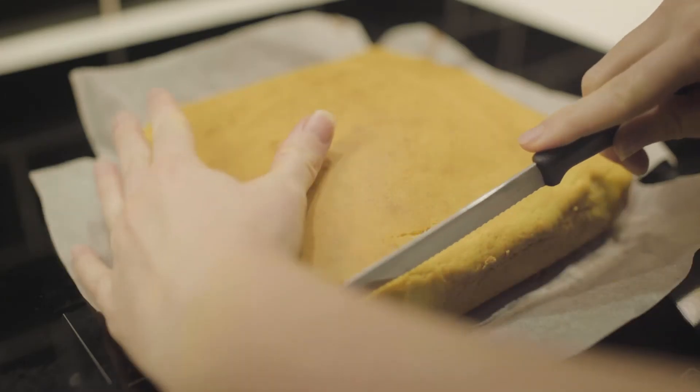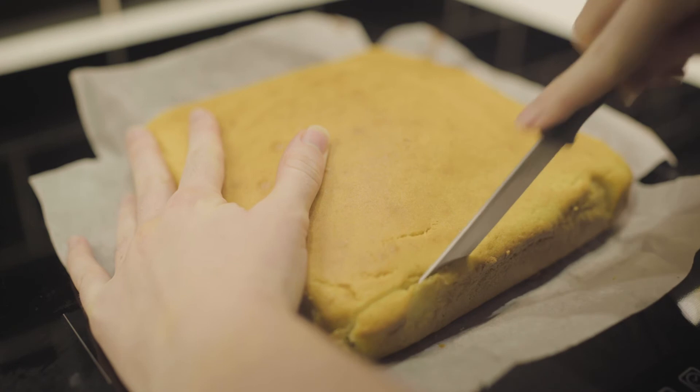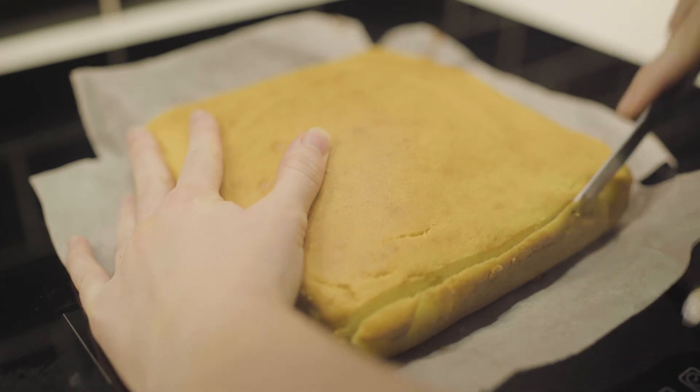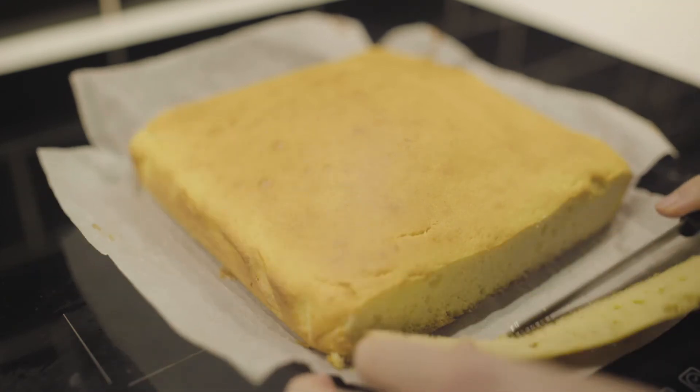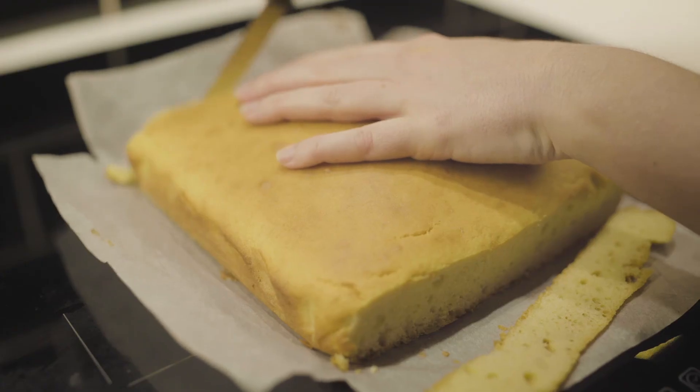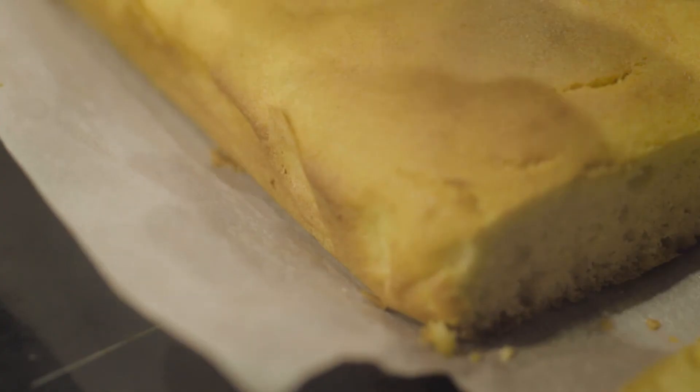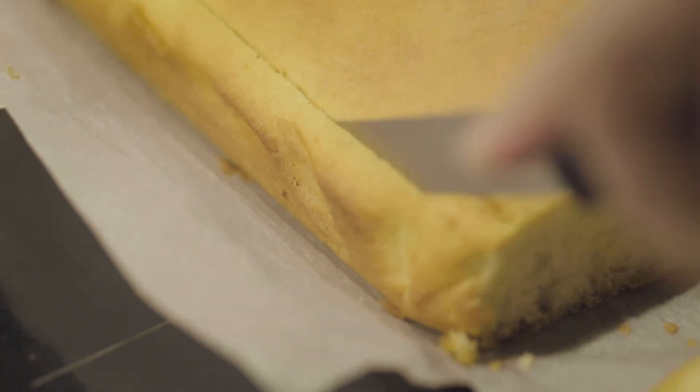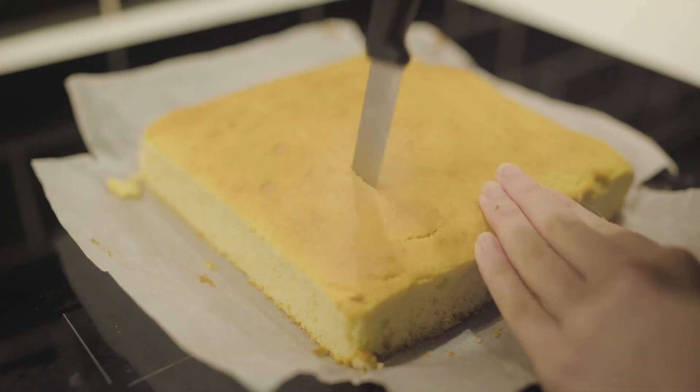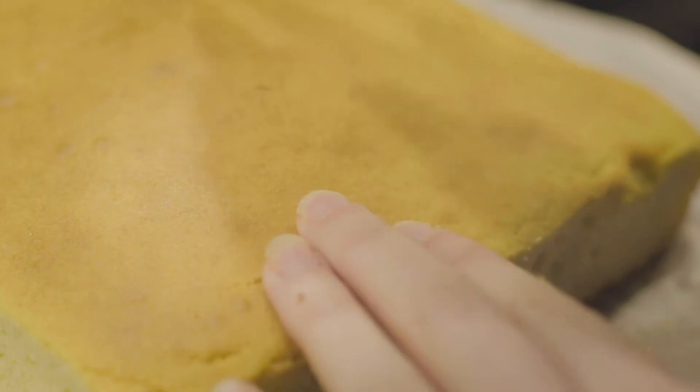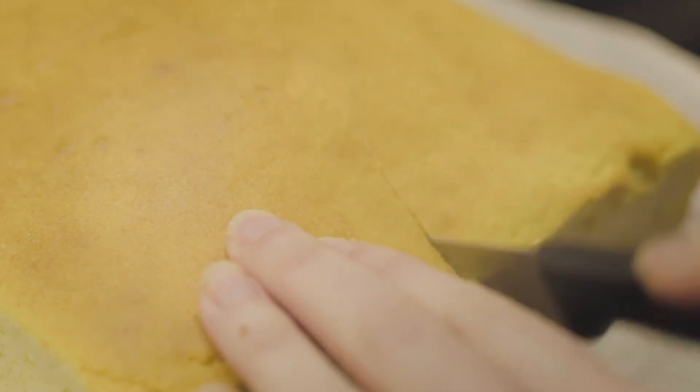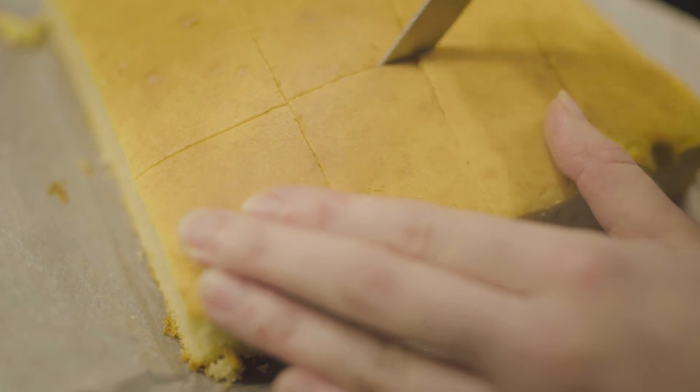When the sponge is completely cooled you can cut off the edges. I like to cut off the sides so that the icing can be absorbed more into the sponge. Then cut the sponge into 16 squares. If you'd like to you can cut off the tops to make them perfect squares but if you don't mind a little bit of a lumpy lamington then don't bother.